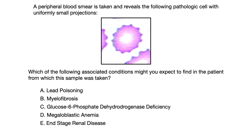A: lead poisoning. B: myelofibrosis. C: glucose-6-phosphate dehydrogenase deficiency. D: megaloblastic anemia. Or E: end-stage renal disease.